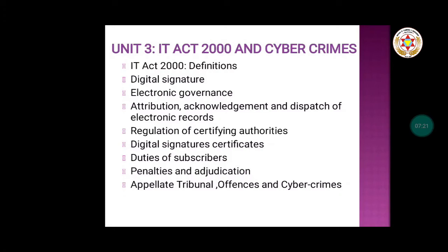Then electronic governance or e-governance — this topic covers different government norms used for the e-commerce platform or for performing business activities online. Various measures and laws are mentioned under e-governance. Then attribution, acknowledgement, and dispatch of electronic records — whatever data is shared, authenticity must be maintained. The sender must be a valid sender and the receiver an authenticated receiver, and both must have acknowledgement of the sending and receiving of data.